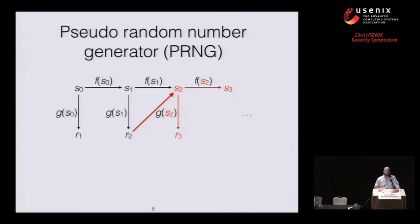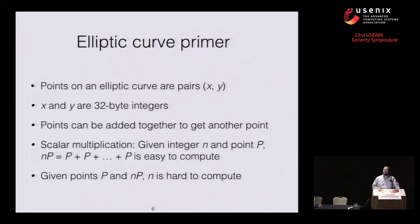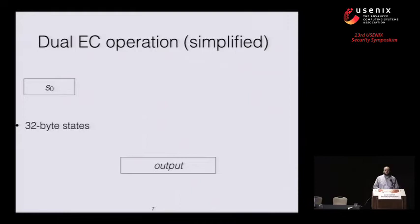The EC stands for elliptic curve. A point on an elliptic curve is an x-coordinate and a y-coordinate, which in this case are 32-byte integers. The fundamental operation you can do with elliptic curves is add points together to get a new point. The operation Dual EC uses is called scalar multiplication: given an integer n and a point P, produce the point nP. This is easy to compute — just add P to itself n times — but the opposite operation, recovering n from P and nP, is difficult to compute. Dual EC starts with a 32-byte state S0.